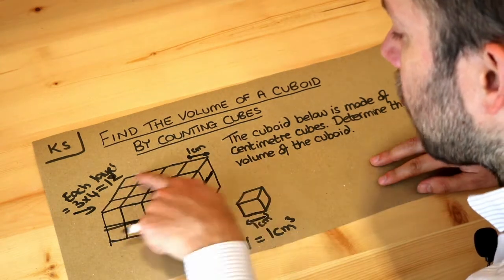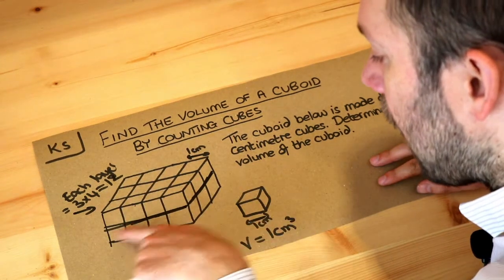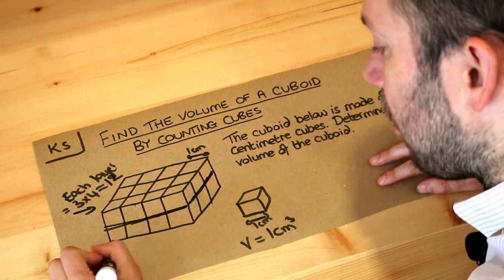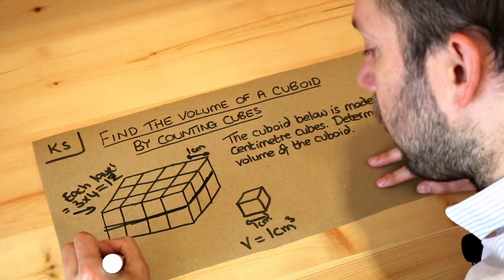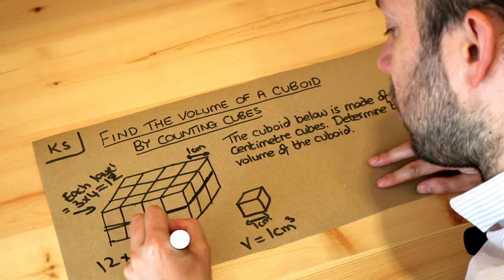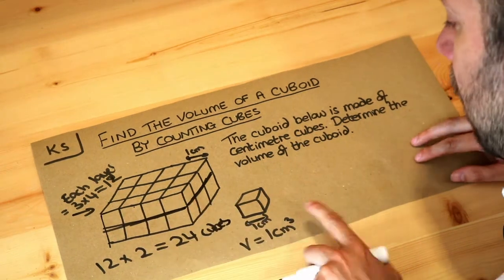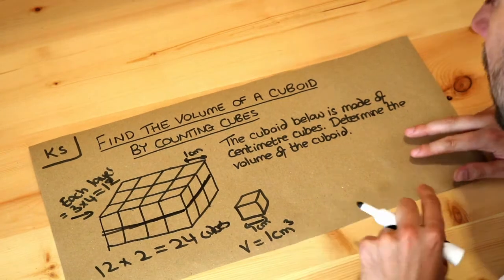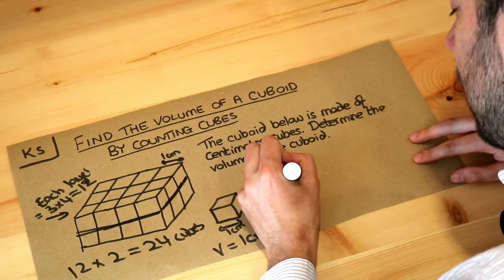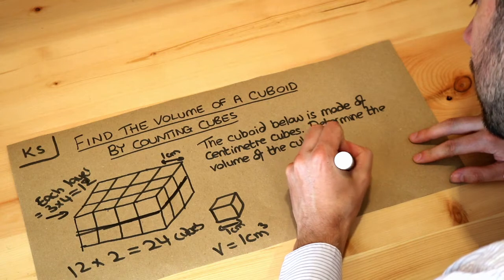How many layers of 12 do we have? We have one layer and then a second layer on the bottom. Therefore, we have 12 times 2, which is 24 little cubes. The answer, given that each cube is 1 centimeter cubed, is 24 centimeters cubed.